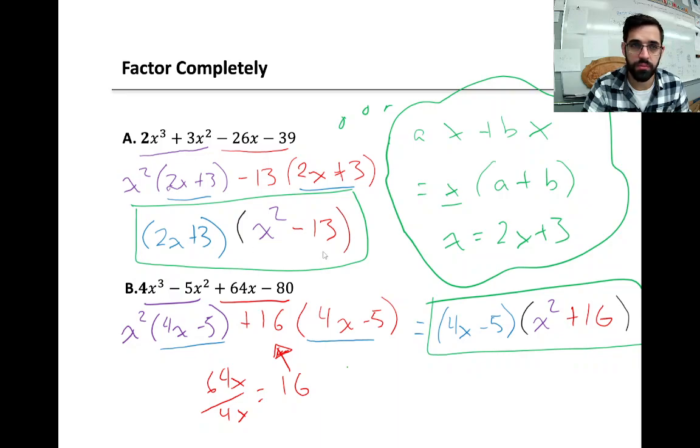So this process is called factor by grouping. We group the first two terms, we group the second two terms. This is what I mean when I say greatest common factor. Ax plus bx, both have a factor of x. Factor out the x. But instead of factoring out x, we're factoring out 2x plus 3. The 2x plus 3 here is the x here. x-squared is the a. Minus 13 is the plus b. So a plus b is the x-squared minus 13. And the x, again, is 2x plus 3.